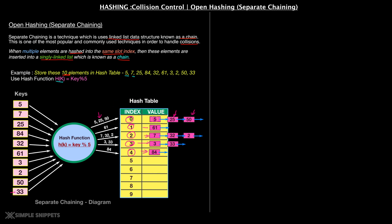As mentioned, this linked list implementation is not necessarily always a singly linked list. It can be implemented as a tree data structure — for example, a binary tree — for faster access. This is one method to mitigate the problem of collision.